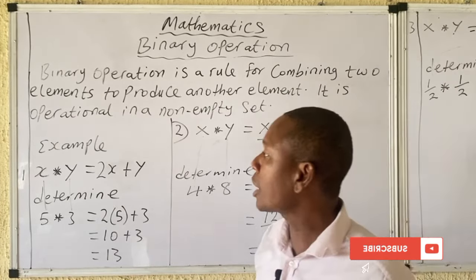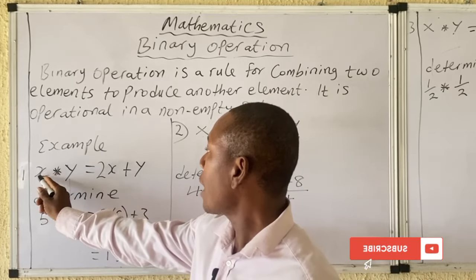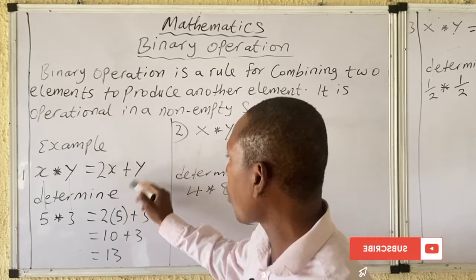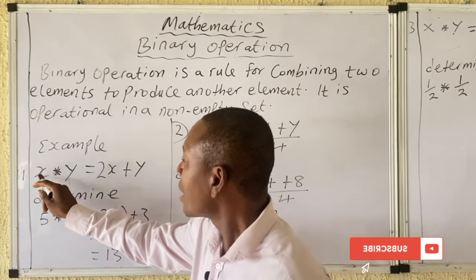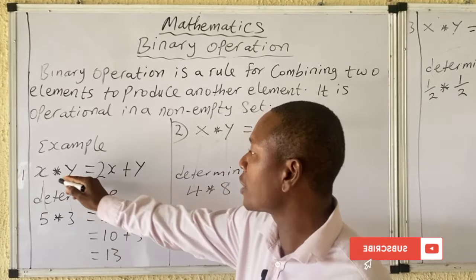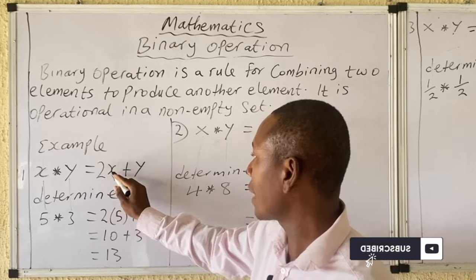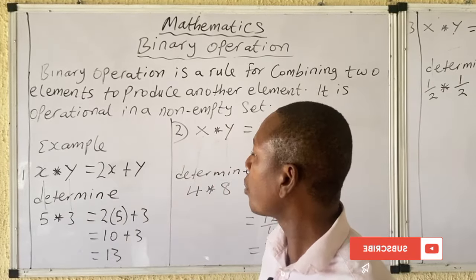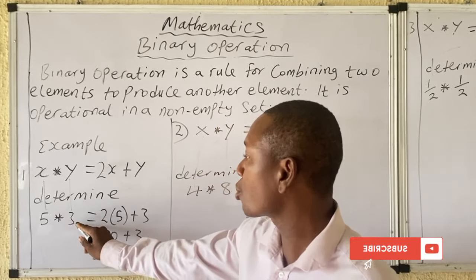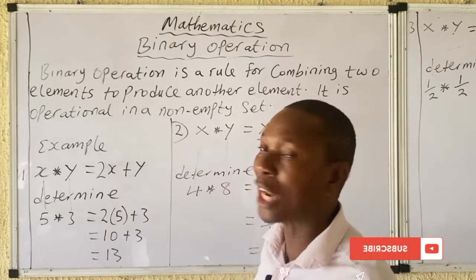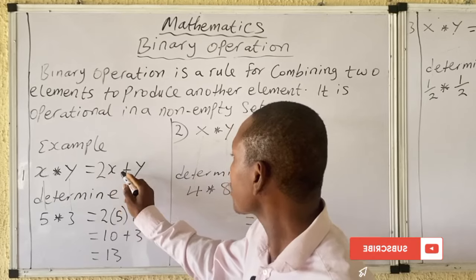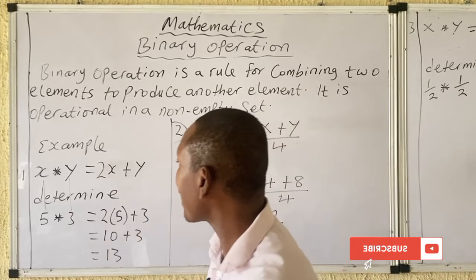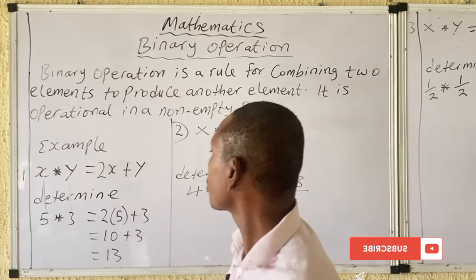Let's look at this operation: x★y = 2x + y. This is the rule for solving x★y. Determine 5★3. If you are given 5★3, you simply use the rule that is given: 2x + y. Put your 2 here — remember x is the first element and y is the second.